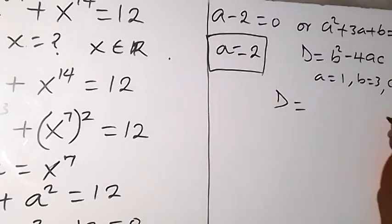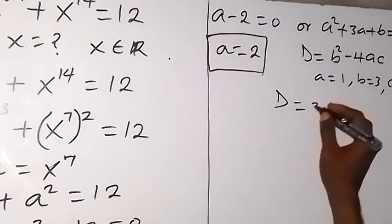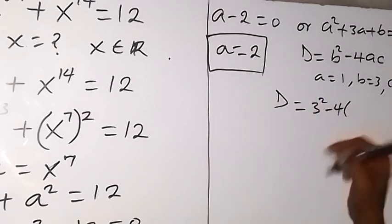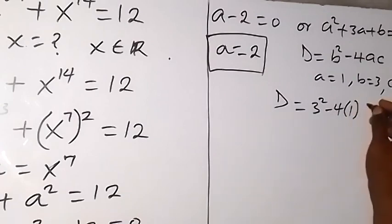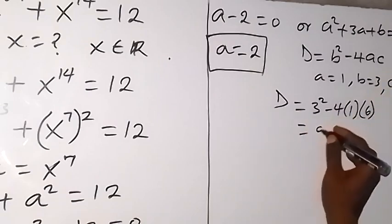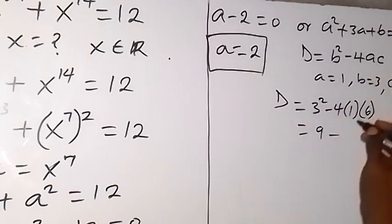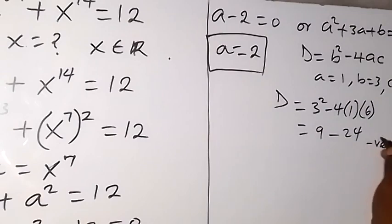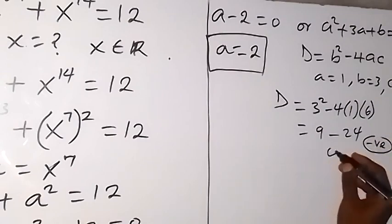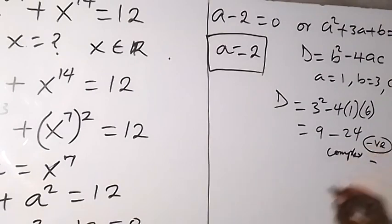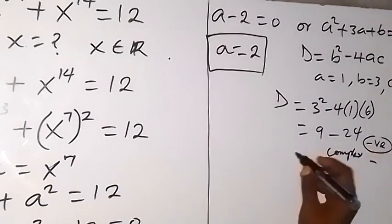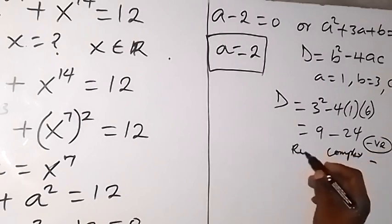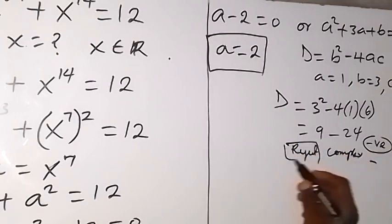The discriminant gives us 9 minus 24, which is minus 15 — a negative value. So this gives a complex solution. Since we are after a real solution, we reject this particular branch and only work with a equals 2.